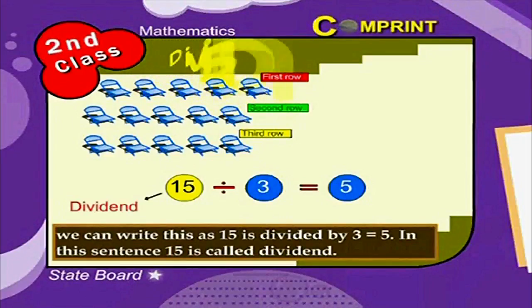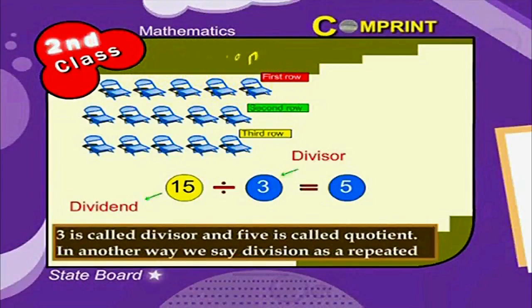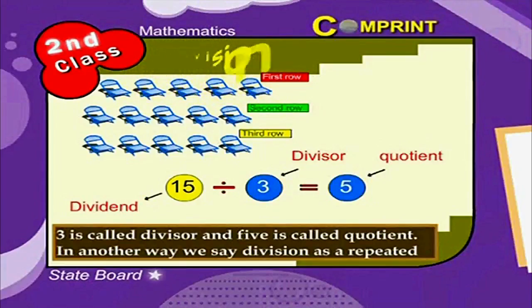In this sentence, 15 is called dividend. 3 is called divisor. And 5 is called quotient.